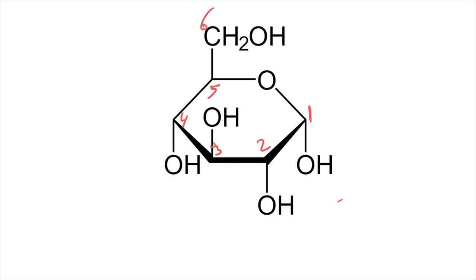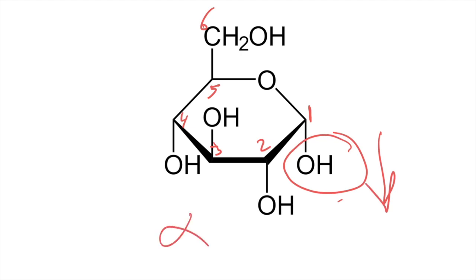Alpha and beta glucose differ by the position of the OH group on their first carbon. If this OH is going down then it's alpha. Beta glucose has the OH on carbon number 1 pointing upwards. Throughout this course we're going to be dealing more with alpha glucose, as most of the molecules we study include alpha glucose. Beta glucose is only found in one polysaccharide known as cellulose.